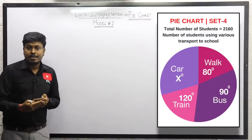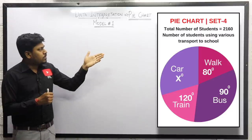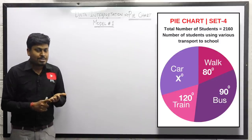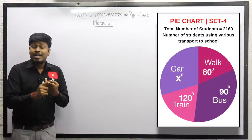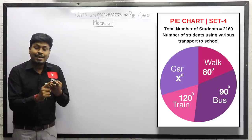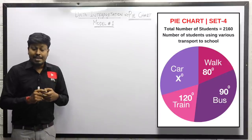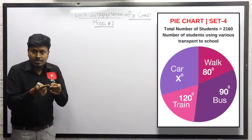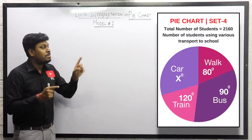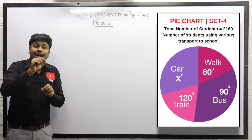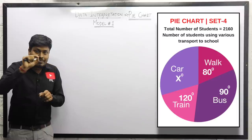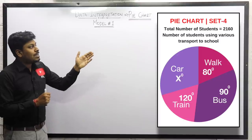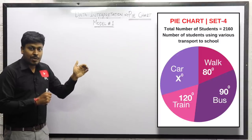To find the value of car, remember what I explained in the introduction: there are two types of chart values — one based on percentages and one based on degrees. If values are in percentages, they add up to 100%. If values are in degrees, they must add up to 360 degrees. Here, walk is 80°, bus is 90°, and train is 120°.